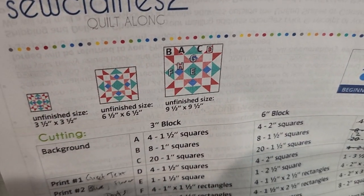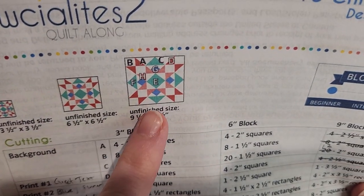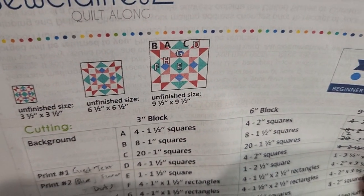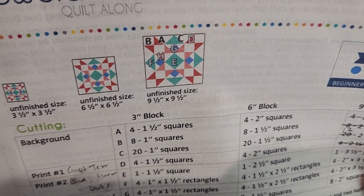Rather than making those one at a time I'm going to do those four at a time. Again you could choose to use directional fabric and because it has radial symmetry you would get it so that they would all be going in the same direction if you chose to do that.